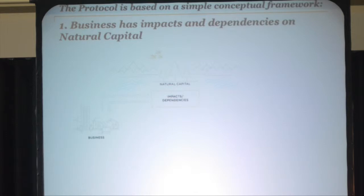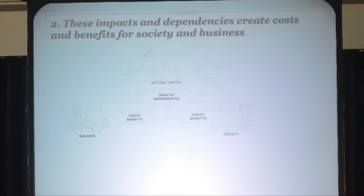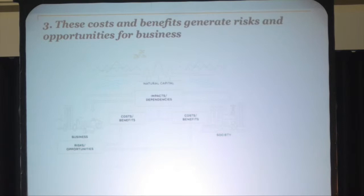Those impacts and dependencies create costs and benefits — directly for businesses, and for society. And obviously, business is part of society. Society also depends on and impacts on natural capital. So you have this either virtuous or non-virtuous cycle. The existence of those costs and benefits means you have risks and opportunities for businesses, and risks and opportunities are what businesses are all about — avoiding risks and exploiting opportunities.